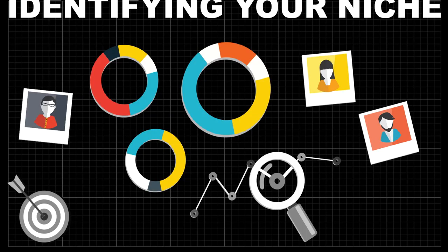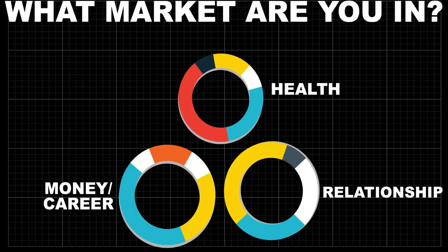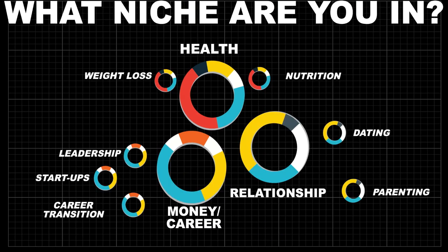Let's talk about identifying your niche. What market are you in? You have the health market, the money and career market, and relationships — these are the three core markets. Figure out what market you reside in. Do you do fitness or personal training? Are you a relationship coach? Do you help people become better parents, or do you help people make money? Figure out exactly what market you're in, then figure out what niche you're in — take it a step further.